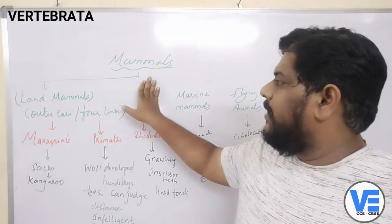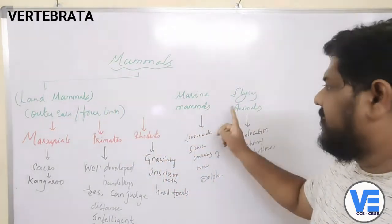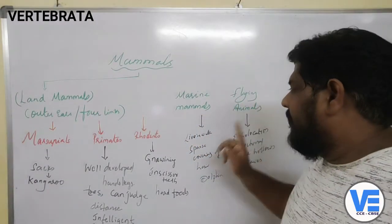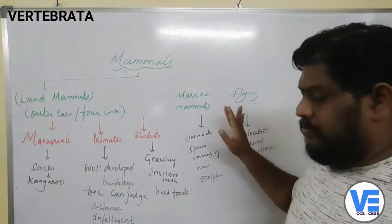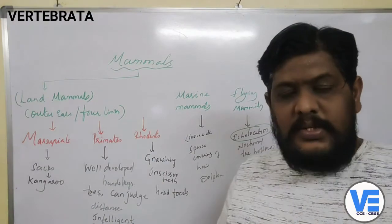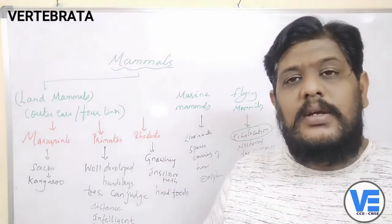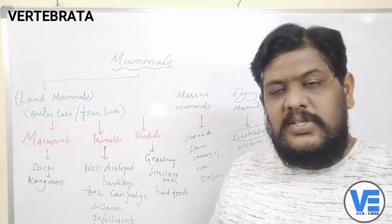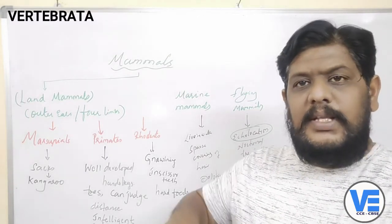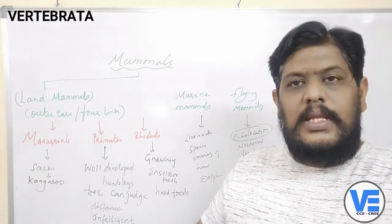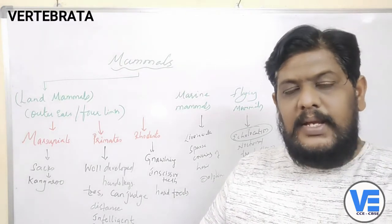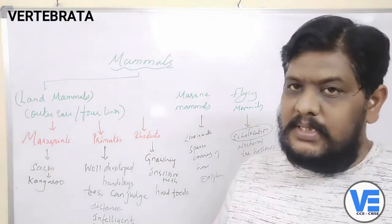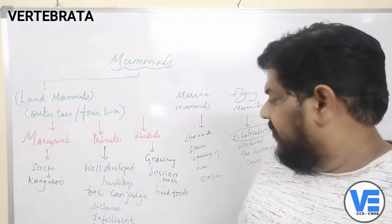In Mammalia there are also marine mammals and flying mammals. Flying mammals produce sounds called echolocation sounds, also called biosonar sounds. Because of these sounds they are able to identify objects or other animals in their path, and even in pitch dark they can identify obstacles. This echolocation is also called biosonar.